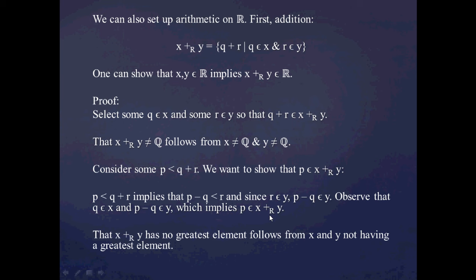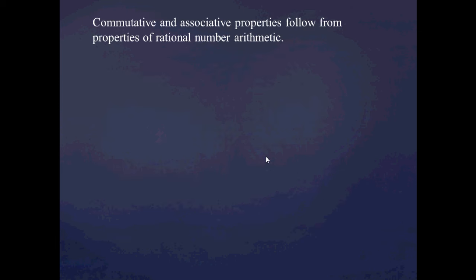Verifying that x plus y has no greatest element just follows from x and y not having a greatest element, so that's easy to show. We've just shown that x and y being Dedekind cuts implies that x plus y is also a Dedekind cut. Furthermore, the commutative and associative laws for addition come straight out of rational number arithmetic when we're dealing with Dedekind cuts, and it's very easy to verify that yourself.